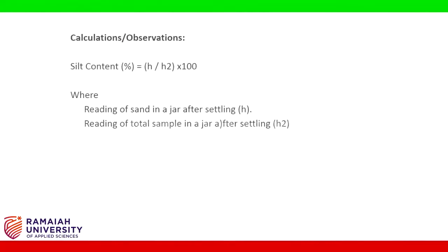Calculations and observations: silt content in percentage equals h divided by h2, multiplied by 100, where h is the reading of the silt layer and h2 is the reading of the total sample in the jar after settling.